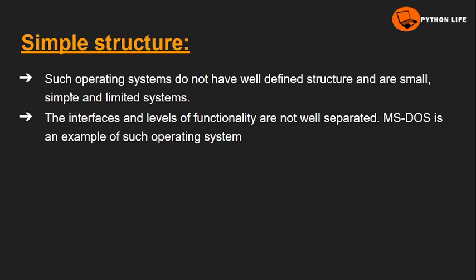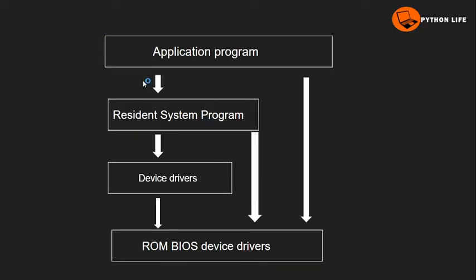In simple structure, such operating systems do not have a well-defined structure. The next example is MS-DOS, which is an example of such an operating system. Now let's observe the diagram.